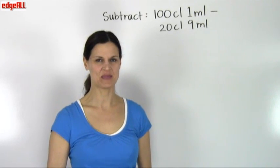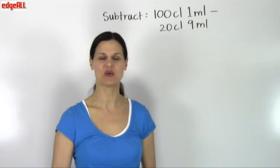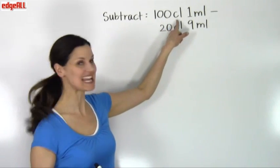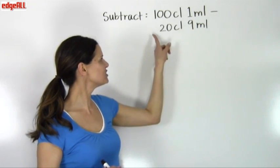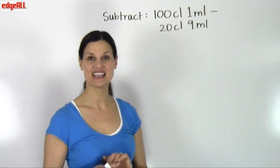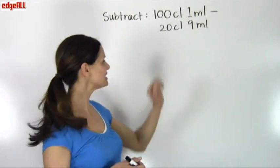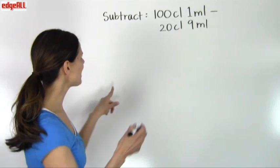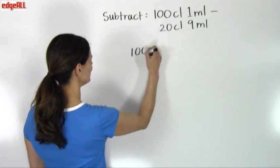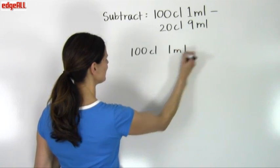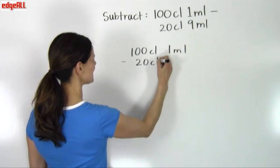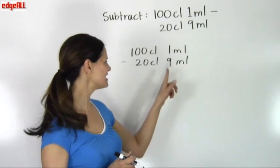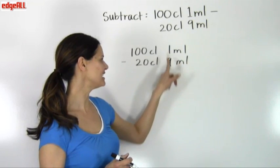Let's look at another example of subtracting units with mixed unit measurements. We are asked to subtract 100 centiliters 1 milliliter minus 20 centiliters 9 milliliters. In this example, we need to remember that 1 centiliter is equal to 10 milliliters. We can see already that we have a problem: we cannot subtract 9 from 1 because 1 is smaller than 9.